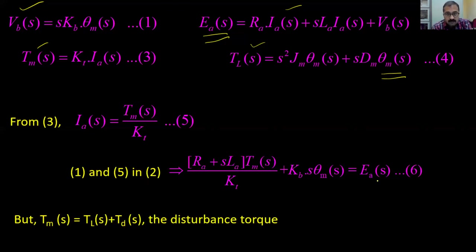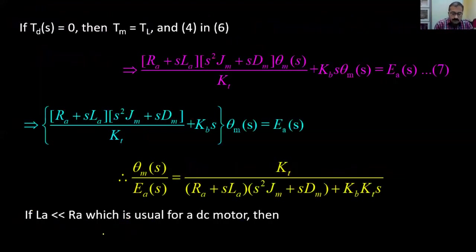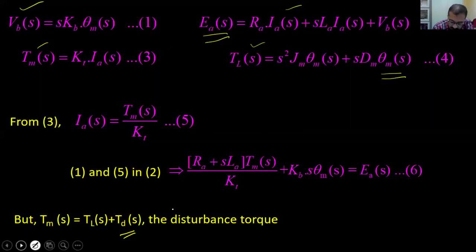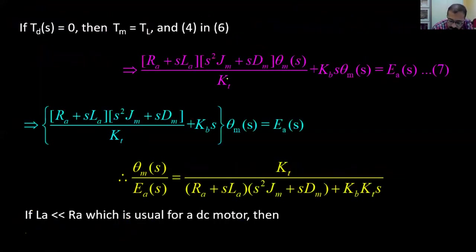The motor torque developed must supply the load torque and any disturbance torque Td(s). If Td(s) = 0, then Tm(s) = Tl(s). Substituting Tl = θm(s)·(s²·Jm + s·dm) into the equation, our equation now consists of the input variable Ea(s) and the output variable θm(s).